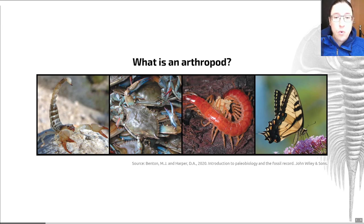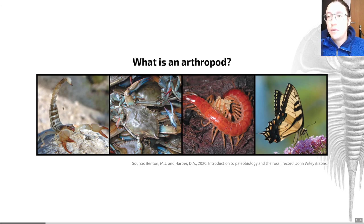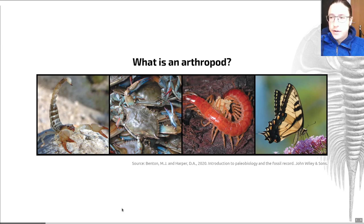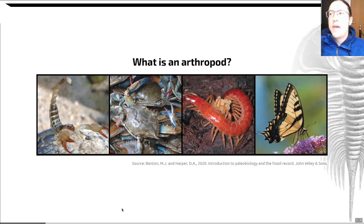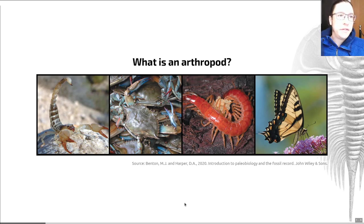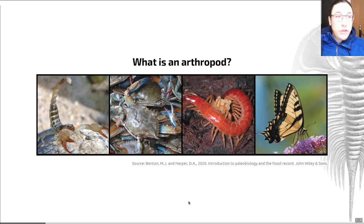The arthropods comprise four living groups: the chelicerates — that's the arachnids and their kin, represented by the scorpion on the left; the crustaceans — crabs, lobster, shrimp, woodlice, and quite a wide range of organisms, many of which are marine; the myriapods — millipedes and centipedes and a couple of smaller groups; and the insects, shown on the right, a very successful group that generally has three sets of walking limbs.